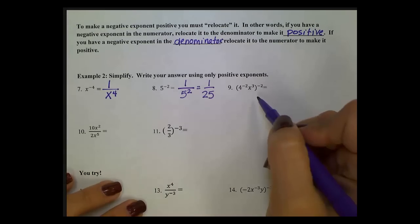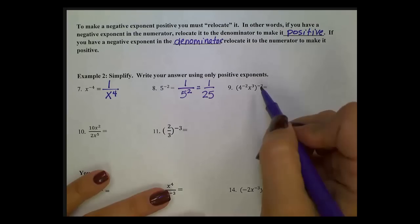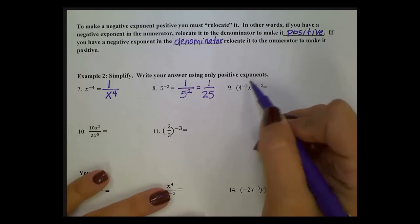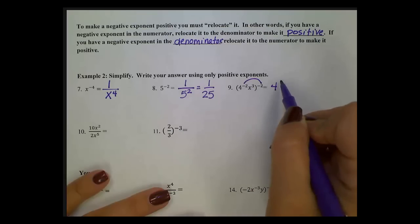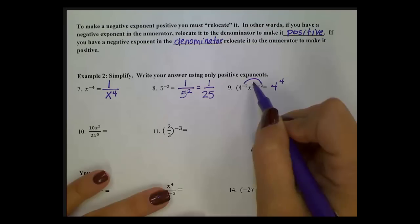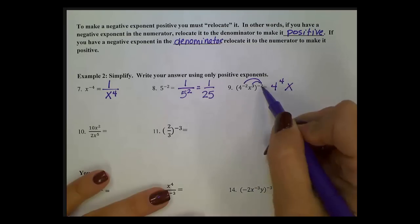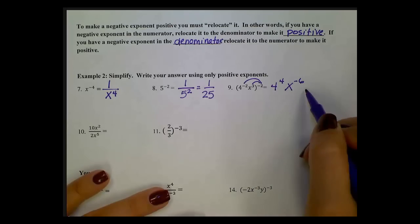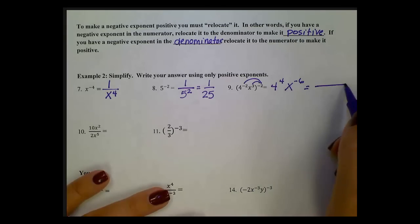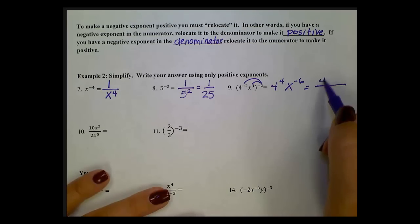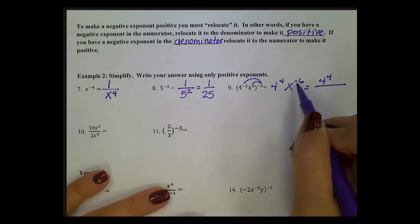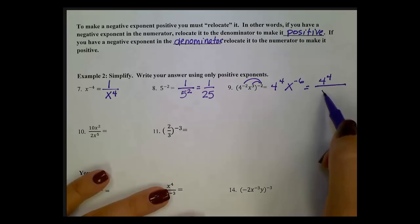In number 9 we're going to apply a couple of properties. From the power rule, a power to a power — you multiply. So I end up with 4 to the positive 4th power, and x to the 3 times negative 2, which is negative 6 power. Now I see a negative exponent, so I make a fraction bar. 4 to the 4th has a positive exponent, so it stays in the numerator. The x to the negative 6 has a negative exponent, so we relocate it to the denominator to make it positive.